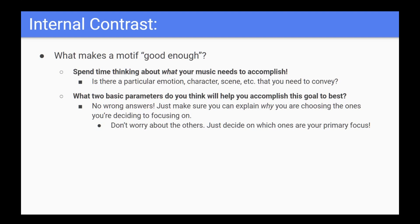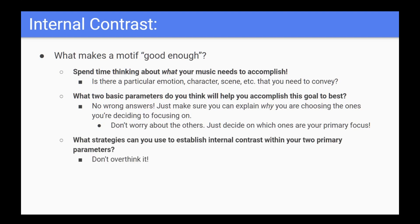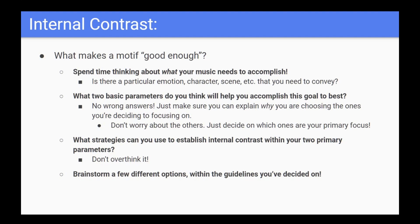Once you know which two parameters you want to go with, try considering which ways you can use them to promote internal contrast. What different dynamics do you want to use? How could you shift timbres? Which pitches can you use? Any rhythmic ideas? You don't need to overthink it — just come up with some general ideas that you like and think of how they can help serve the goals of your music. Once you've got that figured out, just crank out a few different ideas that you think could work. Give yourself some options and pick the one that you like most. Once you have, that's when the real fun can start and we can begin to develop the idea.